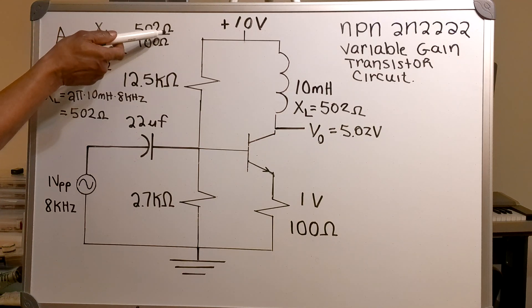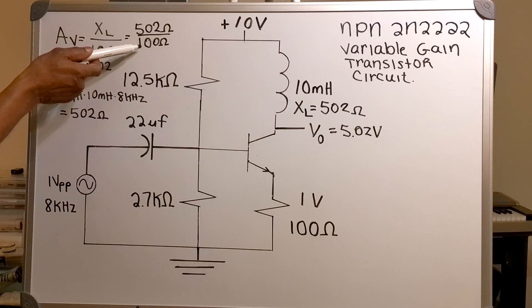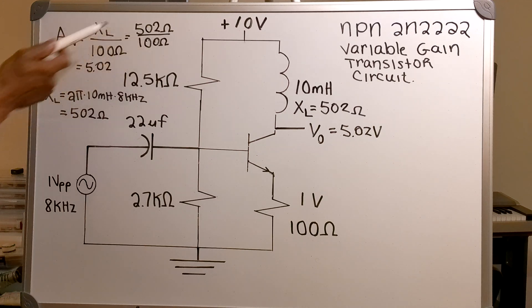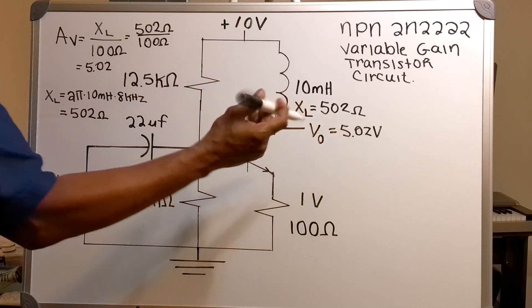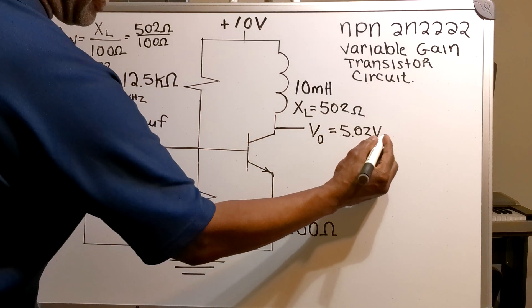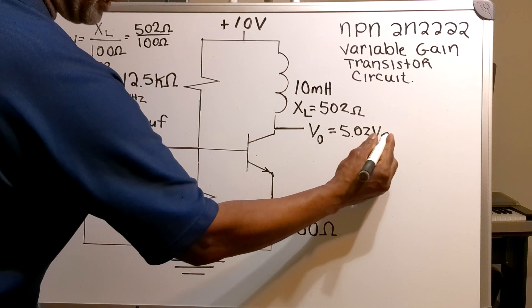502 ohms divided by 100 ohms gives you a voltage gain of 5.02 and my input is 1 volt peak to peak so my output voltage will be 5.02 volts peak to peak.